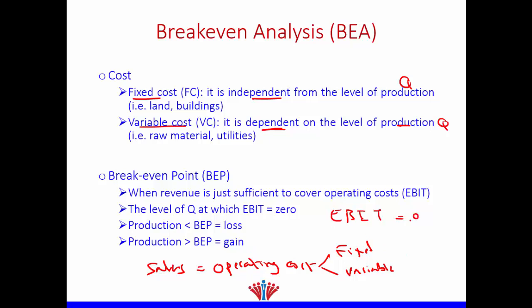Therefore, if we produce a quantity lower than our break-even point — we can call it Q* — we will make a loss. If we produce at a quantity bigger than Q*, we will make a gain.